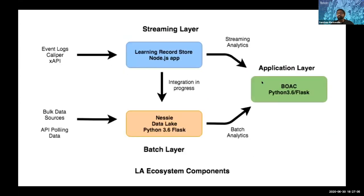The learning record store is the streaming component — our first project. The second was the Nessie data lake itself, which currently brings a lot of institutional data in batch mode. These two projects are collapsing into each other to form a Lambda architecture, where you get fast-paced data from the streaming layer and batch mode data at regular intervals from the batch layer. At the end, you combine both results and offer it to the presentation layer.